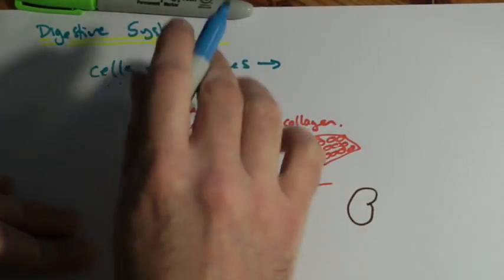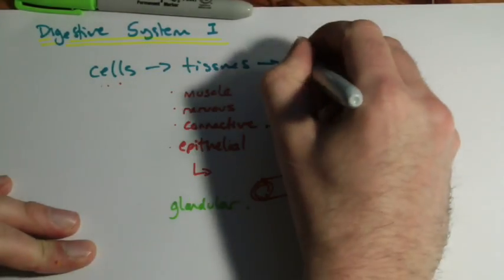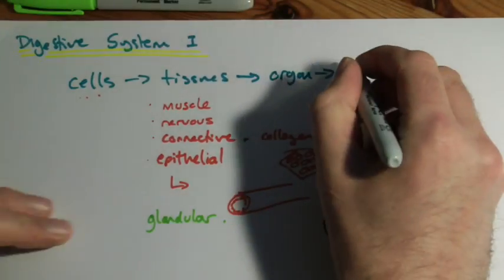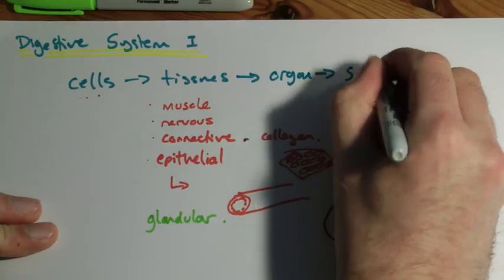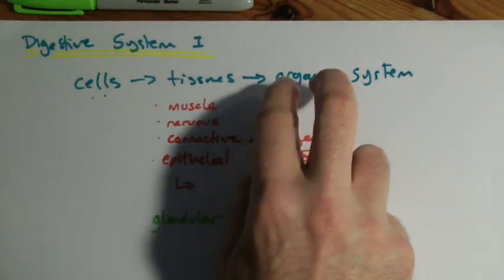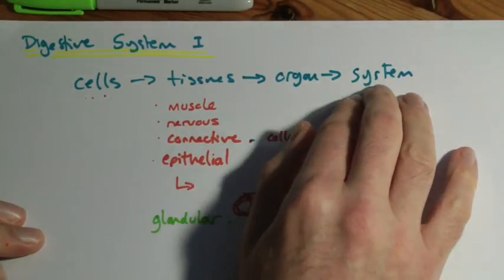If you get a group of tissues working together, you would call it an organ. If you get a group of organs working together to do a particular job, you would call it a system. So the digestive system is a group of organs working together for the job of digestion.